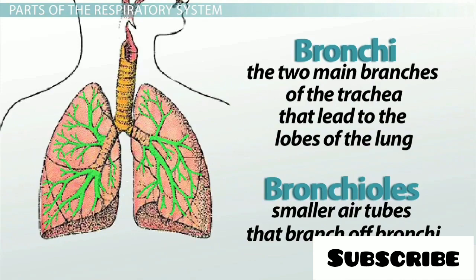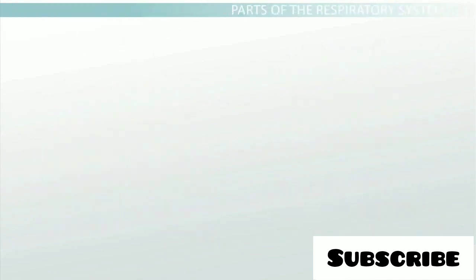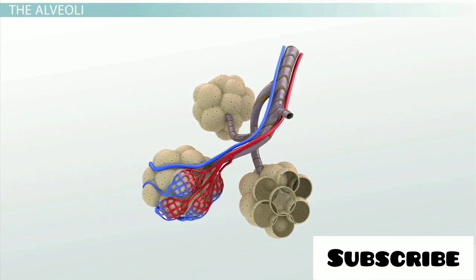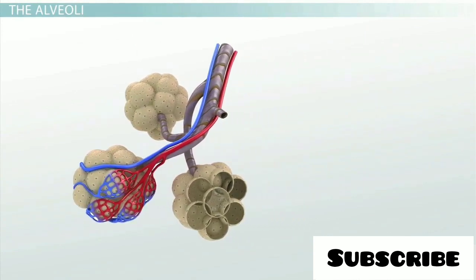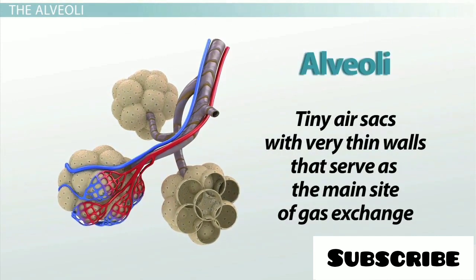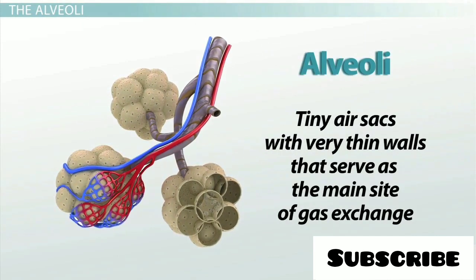And finally, at the ends of the smallest bronchioles are clusters of spherical structures that look a lot like bunches of grapes. These grape-like structures are called alveoli and are basically tiny air sacs with very thin walls, which serve as the main site of gas exchange.